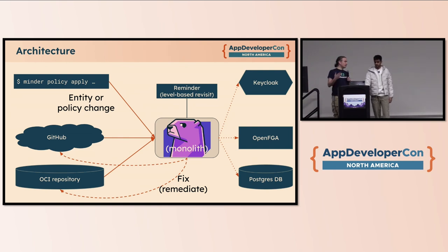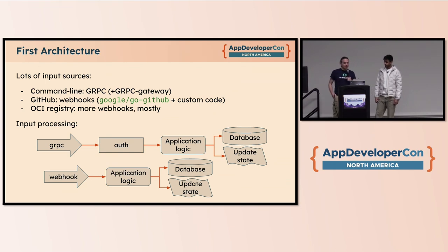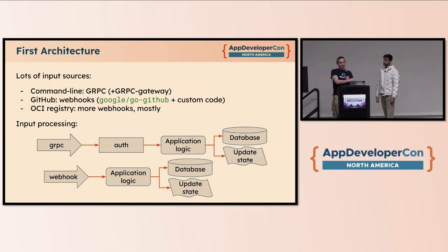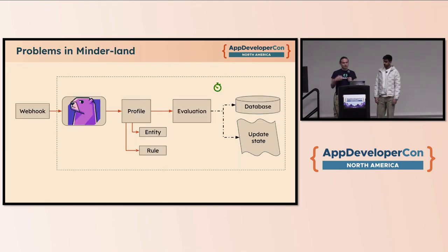Vroom has been working on a component we call Reminder, which comes back and if we haven't heard from anything in a while, checks that it's still compliant with policy. Our first architecture was really simple — RPC comes in, webhook comes in, go run some stuff, update the database, update the state, get back to the user or the webhook. Which is great when things are small.